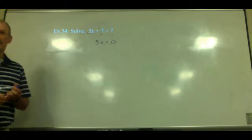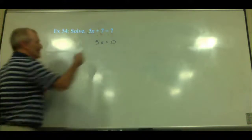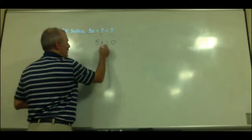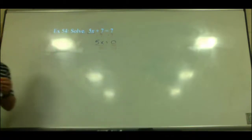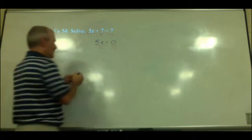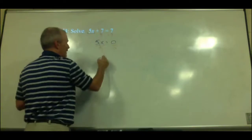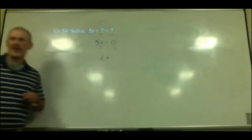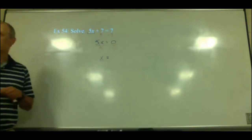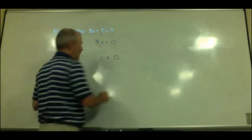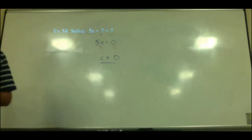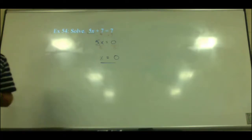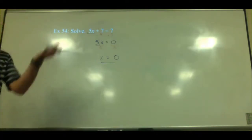Then we divide by 5 — we still have to divide by 5 on both sides. When this cancels, we get x. And 0 divided by 5 is still 0. That's a bit surprising, but it's the correct answer. If you go back and check: 5 times 0 is 0, plus 7 is 7. Makes sense.